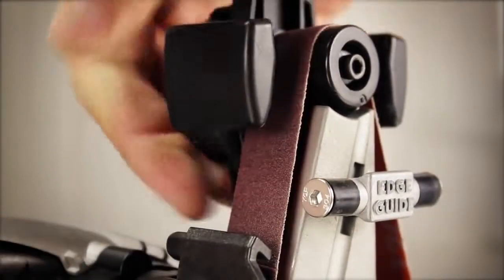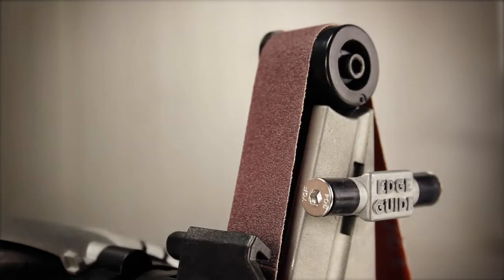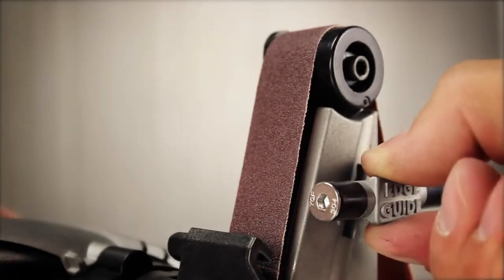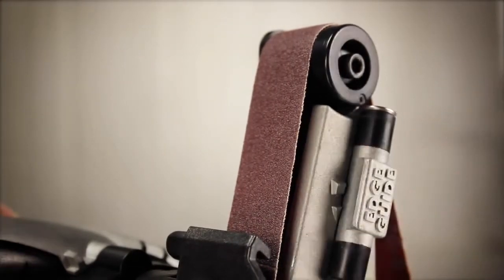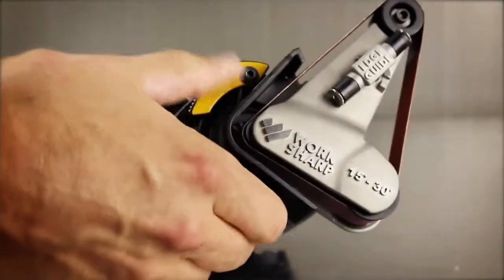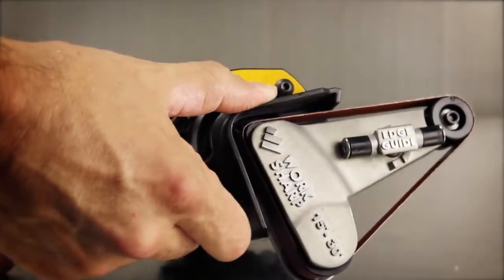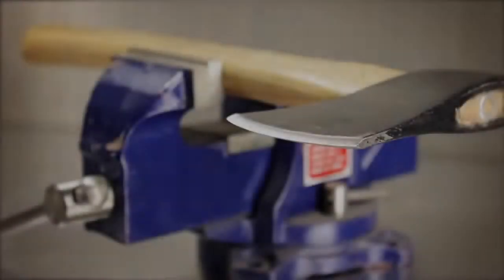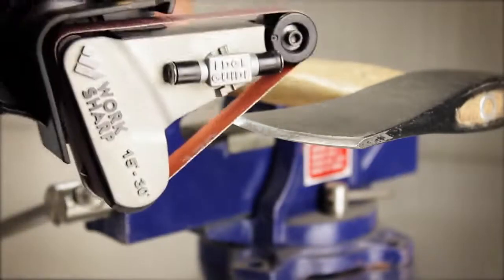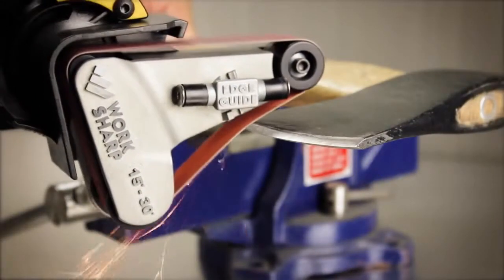For light grinding applications, remove the sharpening guide. Set the edge guide to the raised position. And swivel the sharpening cassette by pressing the cassette lock lever. Use the coarsest belt at the highest speed. Do not overload the tool.